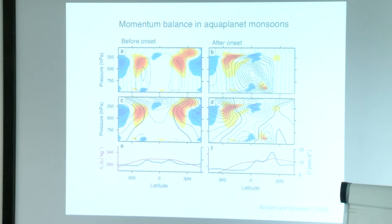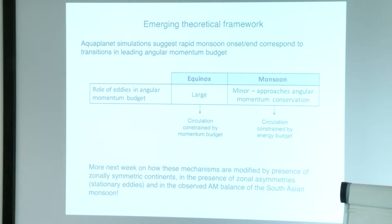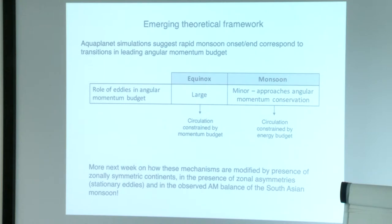This is a caveat in these arguments: we need to know the distribution of the maximum in moist static energy to say something about the large-scale circulations. Because this is a coupled problem, it provides a mechanistic but not a prognostic view of monsoons. We have to run simulations or diagnose fields to look at these interactions — it's very hard to make any prognostic arguments based on this. In summary, the AquaPlanet simulation suggests that rapid monsoon onset and end correspond to a transition in the leading angular momentum budget in the upper branch of the cell, from an equinox regime where the influence of eddies is large, to a monsoon circulation where the role of eddies is minor and the circulation can approach conservation of angular momentum more closely.